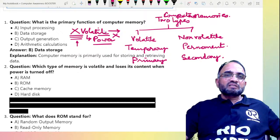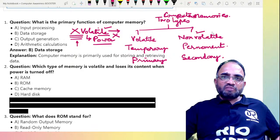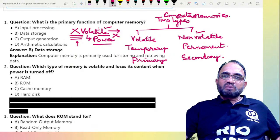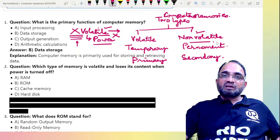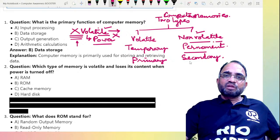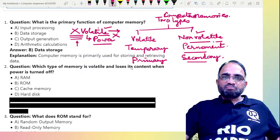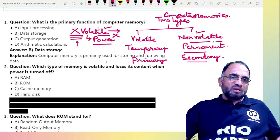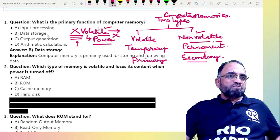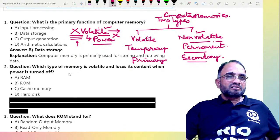Even though some memories retain data in their memory modules, that is why they are called permanent memory or secondary memory. Some permanent memories can also be considered temporary in certain contexts. Coming back to this question: which type of memory is volatile and loses its contents when power is turned off?